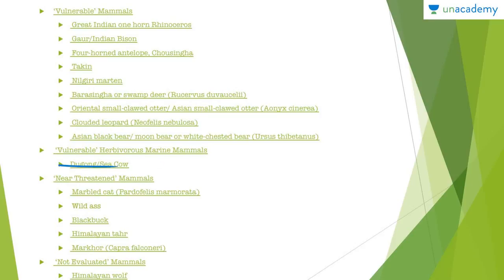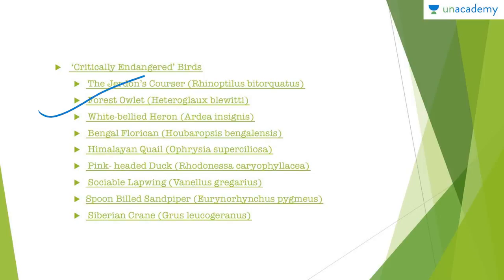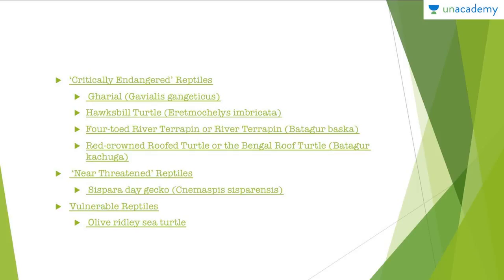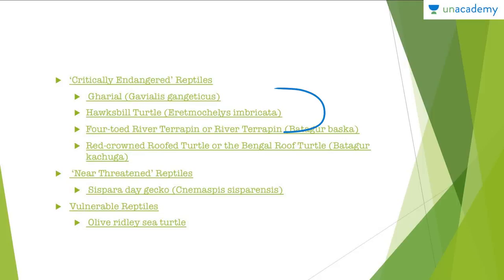Vulnerable species also include the dugong, or sea cow, a herbivorous marine mammal. For near-threatened mammals, the blackbuck is an important one. For critically endangered birds, the Siberian crane is important — go through the full list. For critically endangered reptiles, the hawksbill turtle and the gharyal are very important. Read about where they are found, their habitat, and diet — Google them up; you'll find articles on Wikipedia.